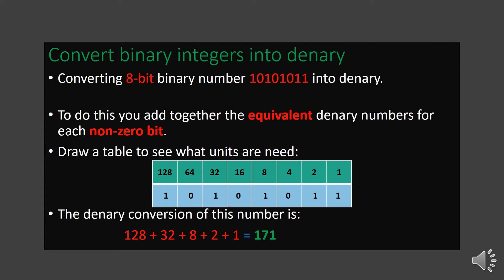We see that 128 has a 1, 32 has a 1, 8 has a 1, and 2 and 1 also have 1s. So we add 128 plus 32 plus 8 plus 2 plus 1 to get a total of 171. So 171 is the decimal number for the given binary. This is how we convert binary integers into decimal.